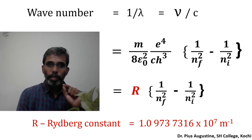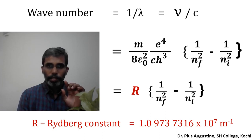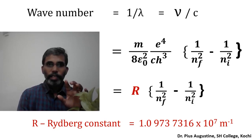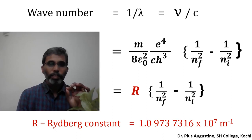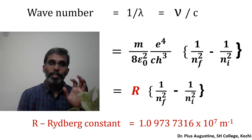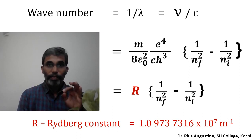The term outside the bracket — me⁴ / (8ε₀²ch³) — consists only of constants: mass of electron, electronic charge, absolute permittivity of free space, velocity of light, and Planck's constant. Therefore this constant term is known as the Rydberg constant. Please pause here and calculate its value by substituting all the constant values, and also check the dimension of the constant.